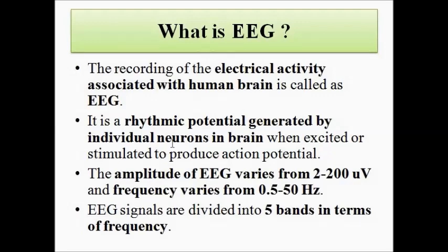The amplitude of EEG varies from 2 to 200 microvolts and the frequency varies from 0.5 to 50 hertz. This frequency range from 0.5 to 50 hertz is generally divided into five bands.